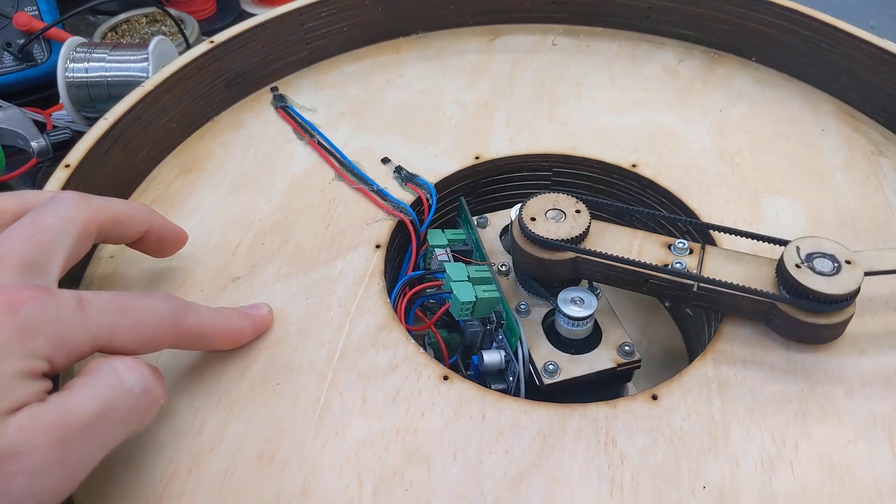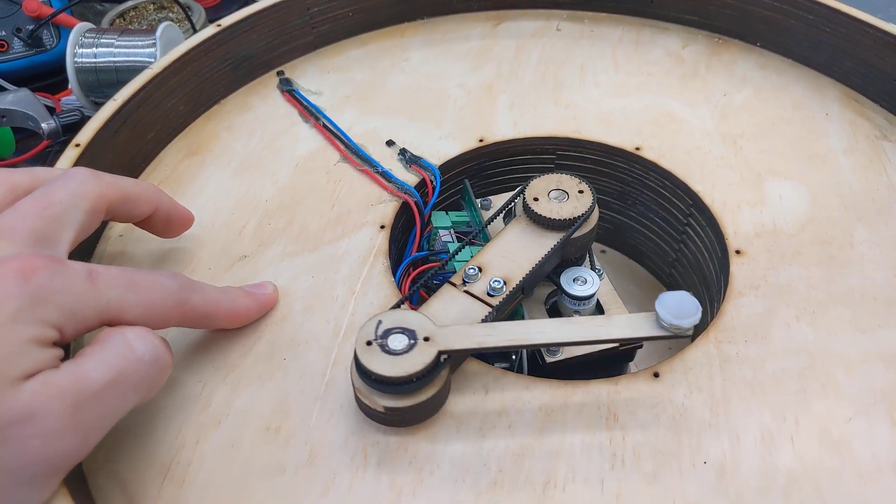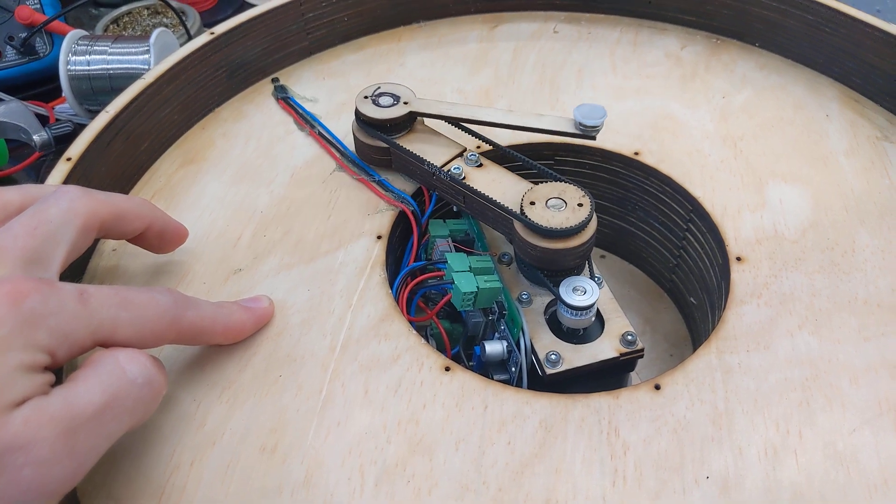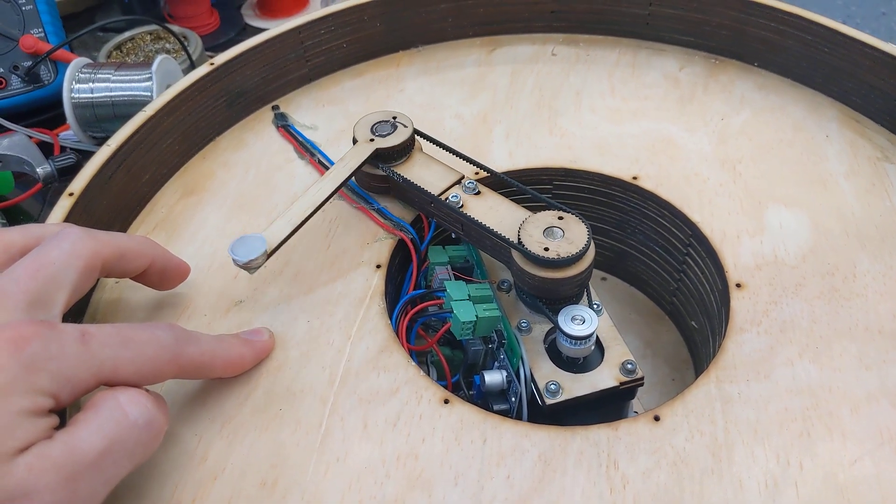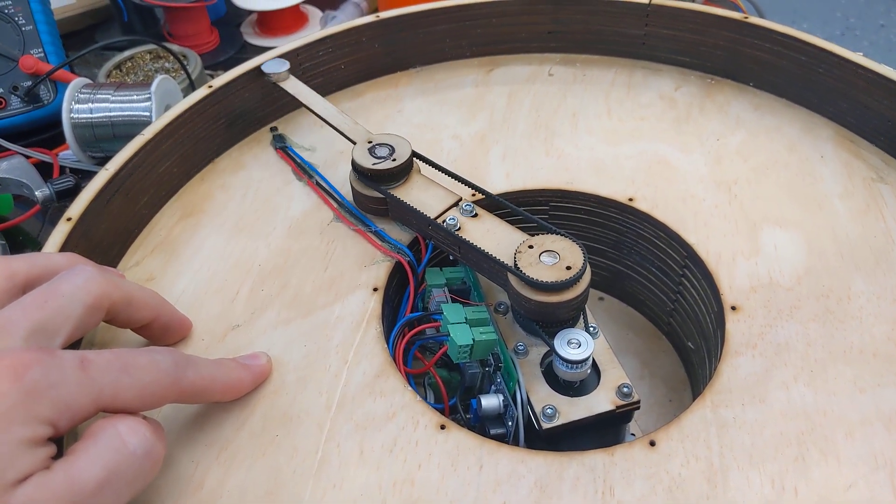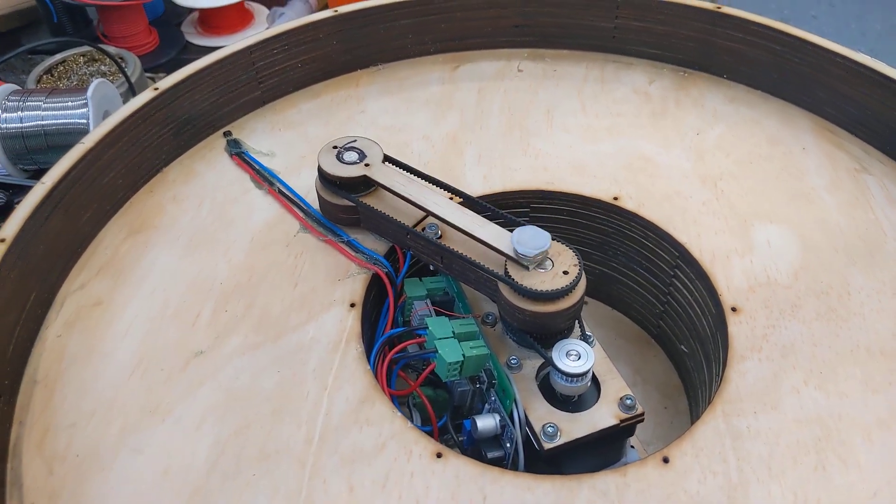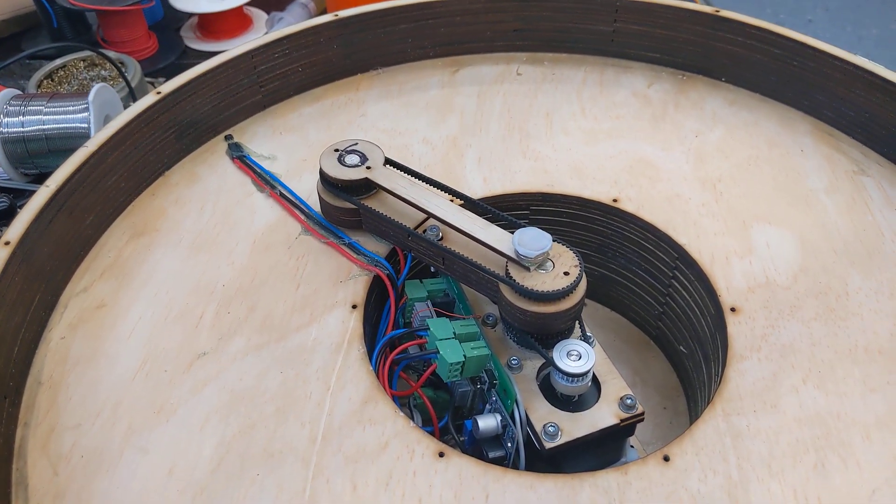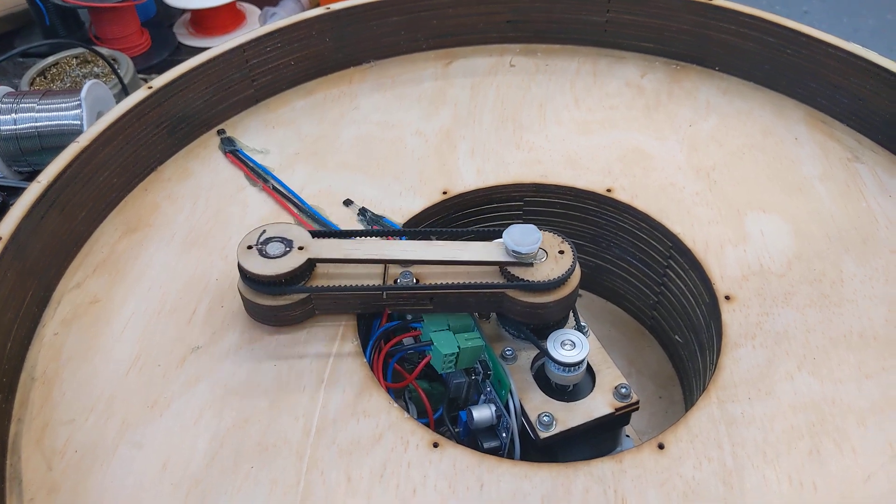So it starts here: arm one does a full rotation back to a starting point and then goes to the home, like right above the sensor. Arm two does the same, and then it goes back to zero degrees, which is dead centre.